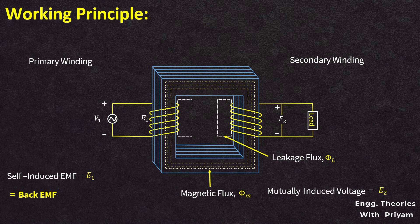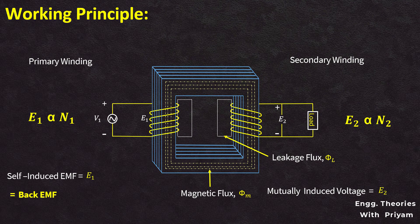The magnitude of induced EMF in a coil depends upon the rate of change of flux linkage. Since the rate of change of flux for both windings is the same, the magnitude of the induced EMF in primary and secondary depends upon the number of turns. The primary induced EMF E1 is proportional to N1, and the secondary induced EMF E2 is proportional to N2. When N2 is greater than N1, the transformer is called a step-up transformer; when N2 is less than N1, it is called a step-down transformer.